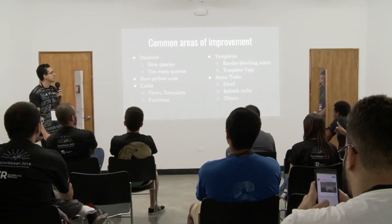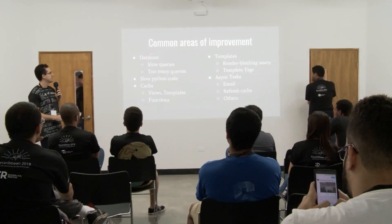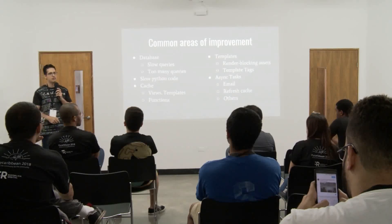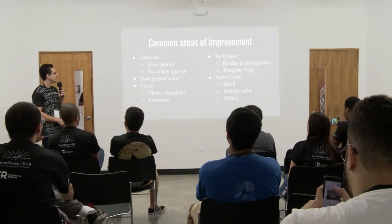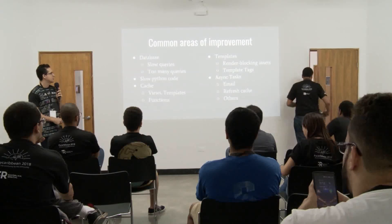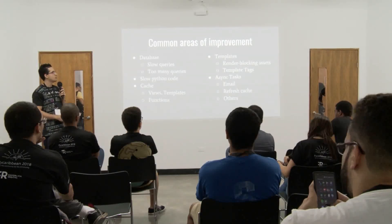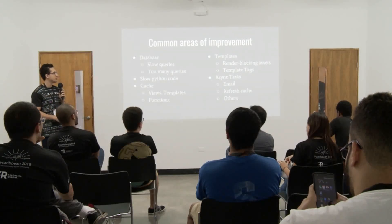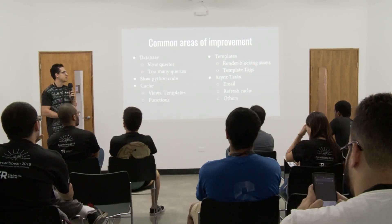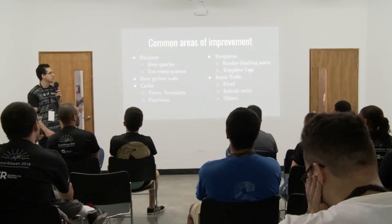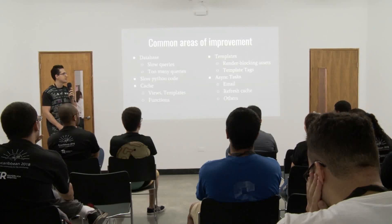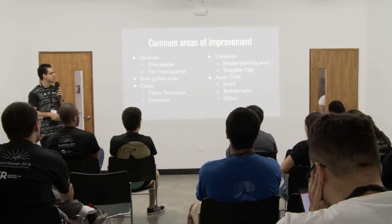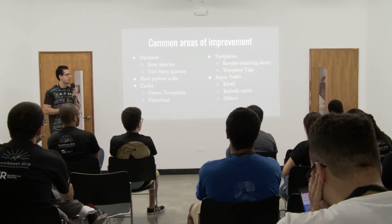These are basically the most critical things we can work on. The first thing is almost always the database — slow queries or making too many queries. Slow Python code, like bad data structures or algorithms that don't perform well. How to cache our views, templates, and functions. How you build your application is very critical — how you place your assets and how you use template tags in Django, which are powerful but can cause issues if abused. And also working with async tasks, email sending, and how to refresh cache in the background in parallel to other things happening in the system.